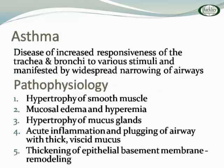Now let's move to asthma — expect six to eight exam questions in this area. Asthma is a disease of increased responsiveness with tracheobronchial widespread narrowing. The pathophysiology involves smooth muscle changes, edema, hyperemia, mucus, inflammation, and importantly, thickening of the epithelial basement membrane. Once you reach that level you're at severe disease, and once the membrane becomes remodeled you cannot go back to an earlier stage. The whole idea behind managing asthma is to keep the patient at the lowest stage to prevent remodeling.